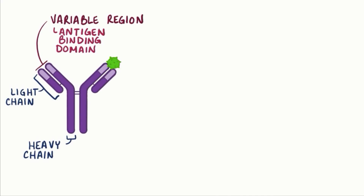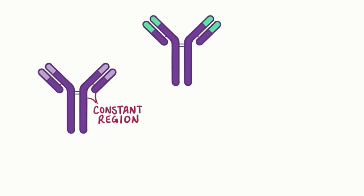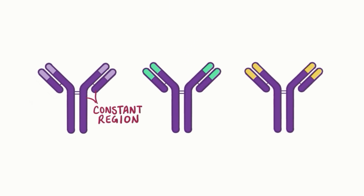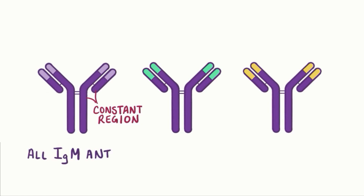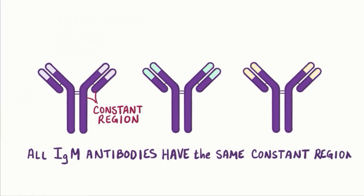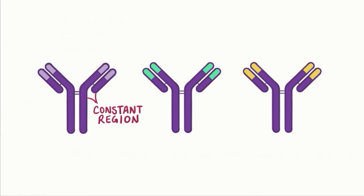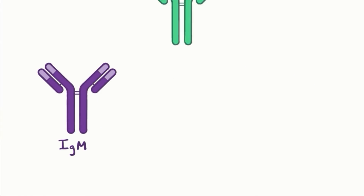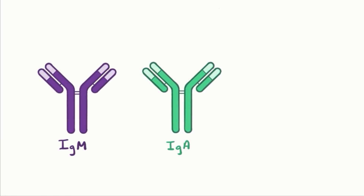Below the variable region, or toward the point where the arms meet, is the constant region, where every member of an antibody class is identical. So all IgM antibodies have the same constant region, but IgM and IgA constant regions are different.